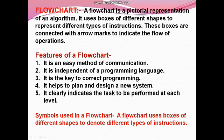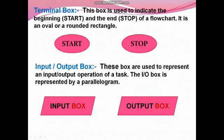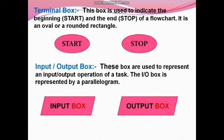Now, symbols used in flowchart. A flowchart uses boxes of different shapes to denote different types of instructions. The terminal box is used for beginning and ending of a flowchart. They are oval or rounded rectangle in shape. Input-output boxes are used to represent an input given to the program and the output result. The IO box is represented by a parallelogram.